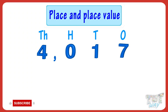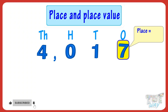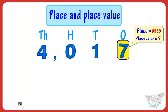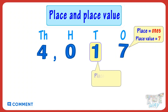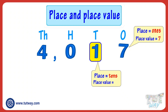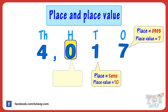The place of seven is ones, and the place value is seven. The place of one is tens, and the place value is one ten, that is ten. The place of zero is hundreds, and the place value is zero hundreds, or zero.